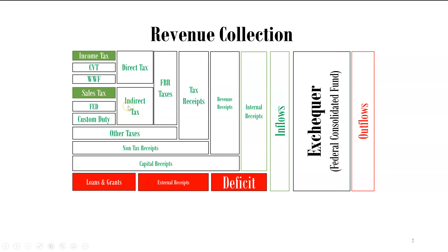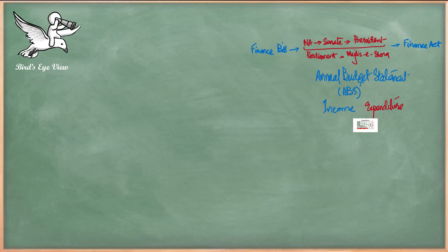FBR taxes are divided into direct tax and indirect tax. The main difference is that direct tax first requires you to figure out whether you have profit or gains in any transaction or business, and then you calculate the tax. Indirect taxes hit each income level equally, which is why the poor person bears more burden from indirect taxes. Income tax is the main direct tax.